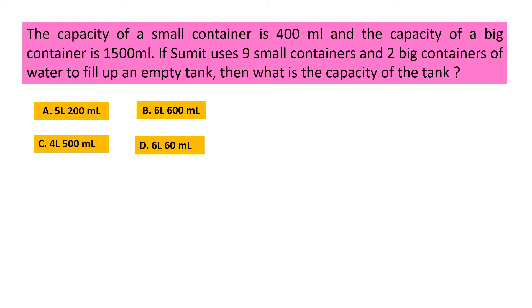The capacity of a small container is 400 milliliter and the capacity of a big container is 1500 milliliter. If Sumit uses nine small containers and two big containers of water to fill up an empty tank, then what is the capacity of the tank? Option A: 5 liter 200 milliliter, Option B: 6 liter 600 milliliter, Option C: 4 liter 500 milliliter, and Option D: 6 liter 60 milliliter.